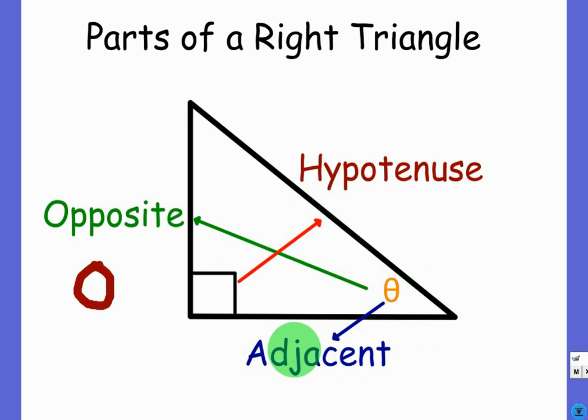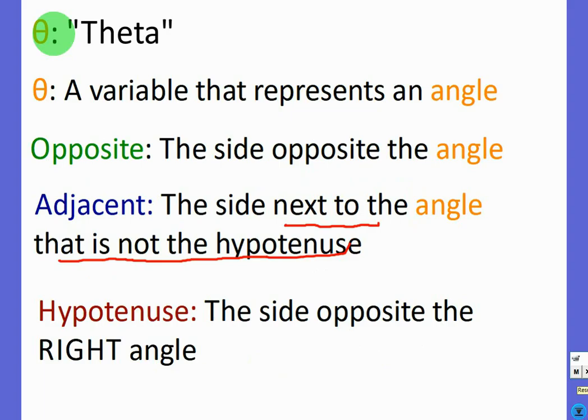And we typically use O, H, and A, respectively. Again, you don't have to write everything down. This symbol right here is Greek. It means theta. It's a variable that represents an angle. Pretty much talked about all this stuff, so I'm not going to harp on it, but those are your three ways to label the sides of a right triangle.